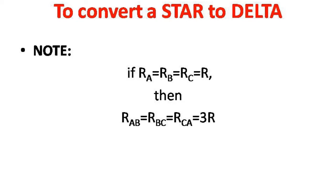For example, if Ra = Rb = Rc = 5 ohms, then Rab = Rbc = Rca = 15 ohms. We conclude that the three resistances in delta connection will be 15 ohms.